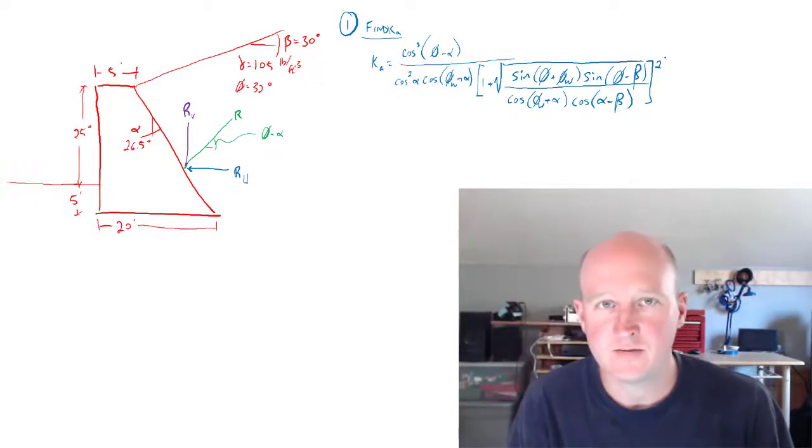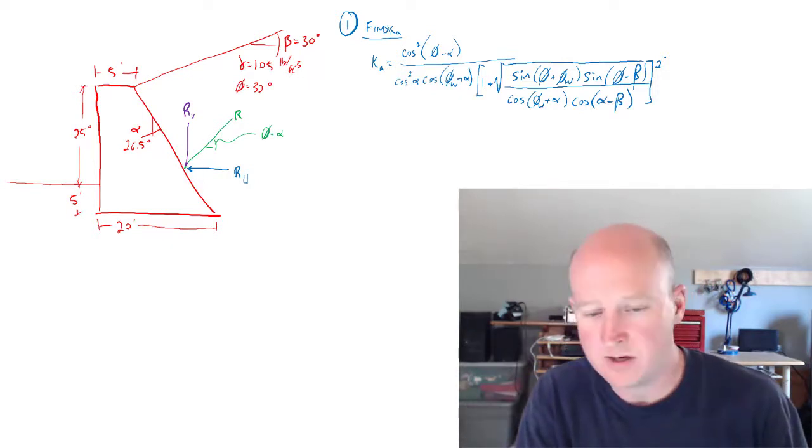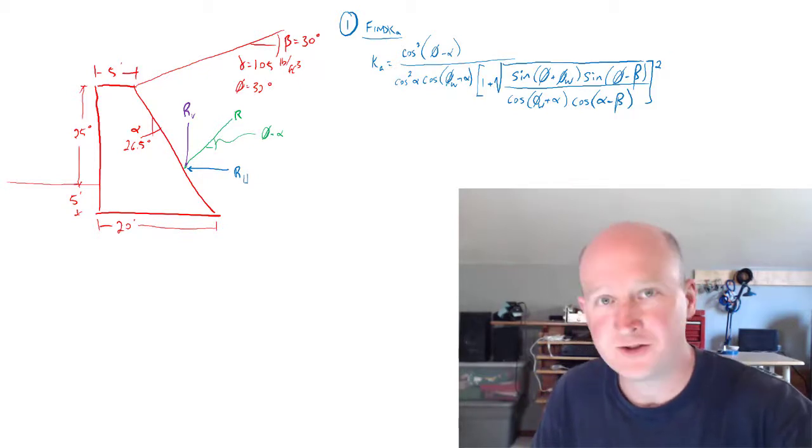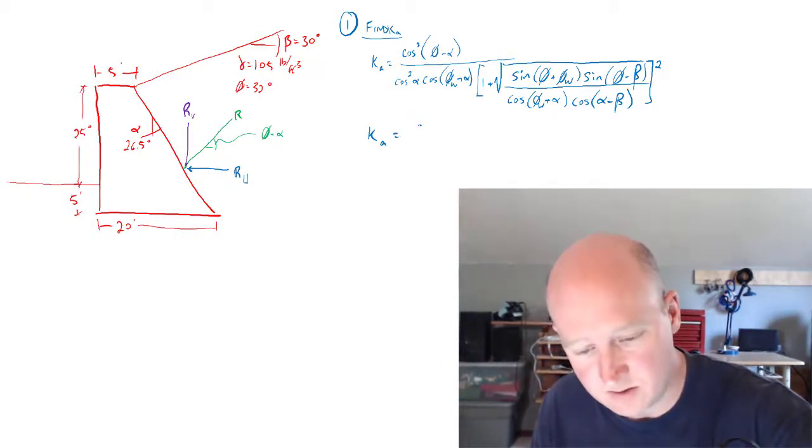So because this thing is so involved and it'd be hard to troubleshoot, I'm going to go ahead and put down the numbers that correspond with the different areas that I've got broken out. So you may have a better shot at trying to troubleshoot this if you wanted to put it into Excel. And I would encourage that because it is such an involved calculation.